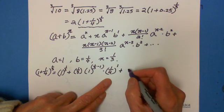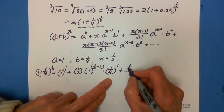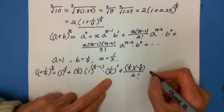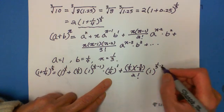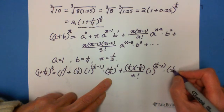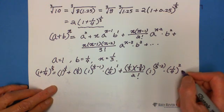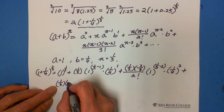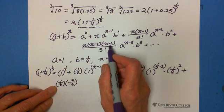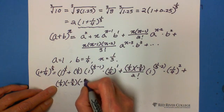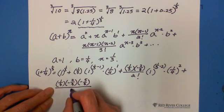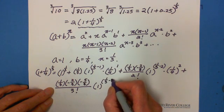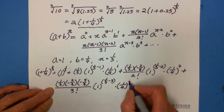Then plus, the third term: on the bottom is 2 factorial; on top is 1/3 times (1/3 − 1), which is negative 2/3. Multiply 1 to the (1/3 − 2) exponent, and B is (1/4) to the 2 exponent. Then plus, the fourth term: (1/3) times (negative 2/3) times (1/3 − 2), which is negative 5/3, divided by 3 factorial; A is 1 to the (1/3 − 3) exponent, and B is (1/4) to the 3 exponent.